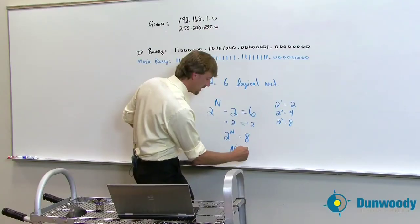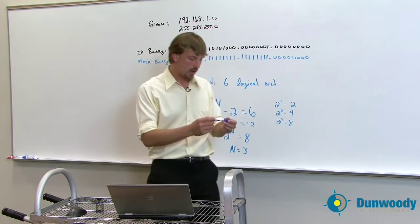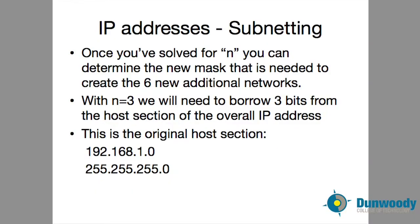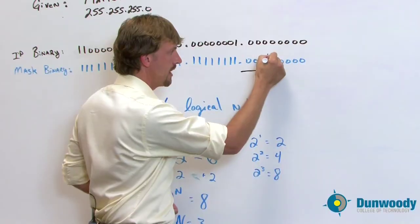So what does that tell us? N equals three. Great. Fabulous. Now what? That three is how many spaces we're going to move in this bit value here. So we actually have to move this dividing line three bits this way. Right here.